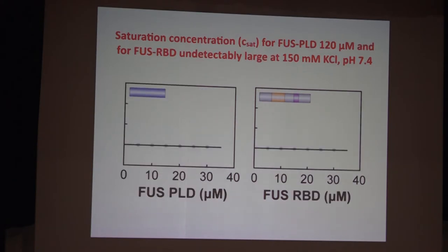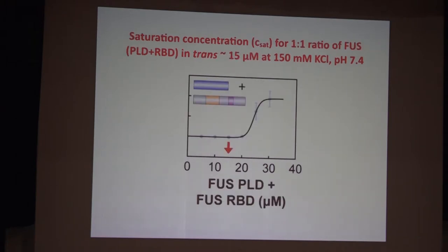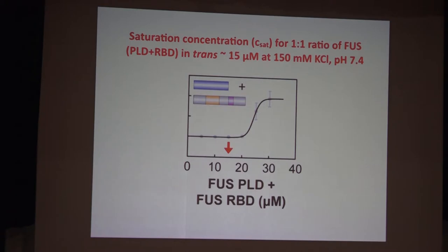All the attention on FUS has been about its low-complexity domain — the prion-like domain. But it's actually quite puny when it comes to driving phase separation on its own; you need ridiculously high concentrations. For the RNA binding domain alone, you have to go to insanely high concentrations. But when you put the two together, even in trans, you can drive phase separation at molar equivalents of around 15 micromolar. This suggests the driving forces are not in one or the other domain alone — you need synergy between the two. A lot that has been learned by studying the LCD alone is interesting but perhaps not physiologically relevant.